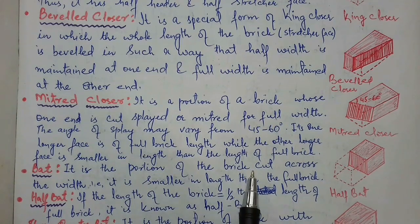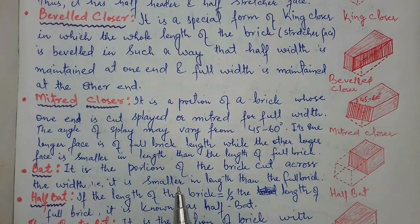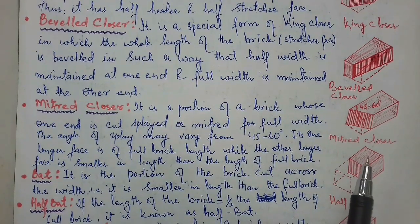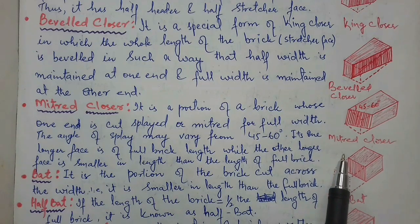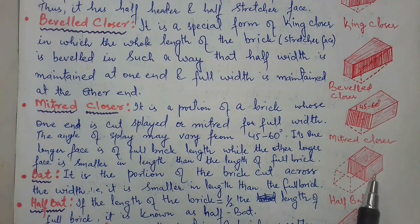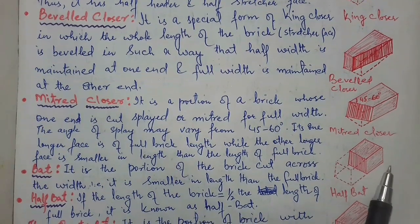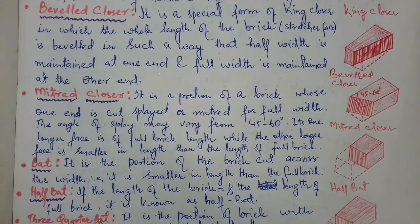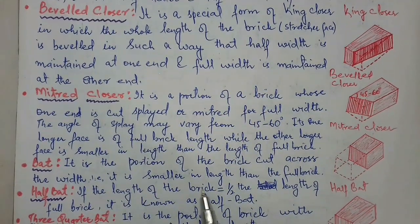Bat: it is the portion of a brick cut across the width — that is, it is smaller in length than the full brick. If you see a brick cut along its width, you can call it a bat. Half bat: if the length of the brick is equal to half the length of the full brick, it is known as a half bat.